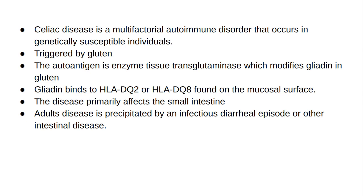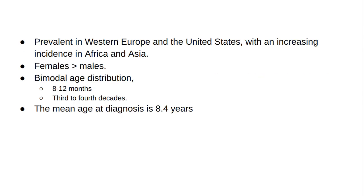Genetics plays an important role in celiac disease. Gliadin binds to HLA-DQ2 or HLA-DQ8 found on the mucosal surface. The disease primarily affects the small intestine, where it progressively leads to flattening of the small intestinal mucosa. In adults, the disease is precipitated by an infectious diarrheal episode or other intestinal disease. Celiac disease is most prevalent in Western Europe and the United States, with an increasing incidence in Africa and Asia.